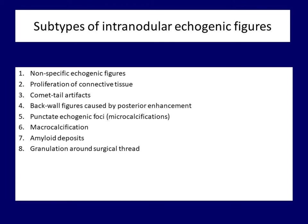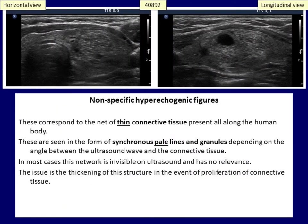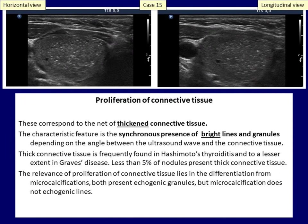So what are the subtypes of echogenic figures? I tried to give a full overview and listed several forms only rarely mentioned in the literature. You can pause or rewind the video at any time. The first one, which is almost unrealized in everyday practice, is the fine spiderweb-like structure of the thyroid and the thyroid nodule — the connective tissue. Usually it is presented in the form of pale lines and granules all along the thyroid. It has no relevance except for those cases when the connective tissue proliferates. This is our second form, also characterized by the synchronous presence of echogenic lines and granules, but these are more thick and bright in the event of proliferation.